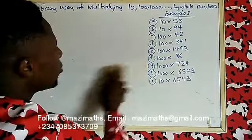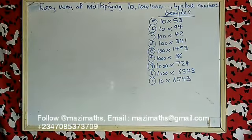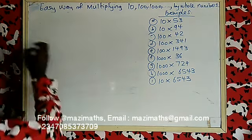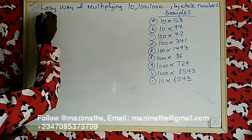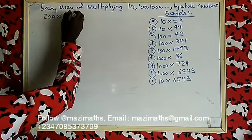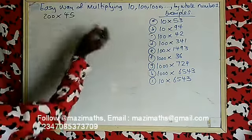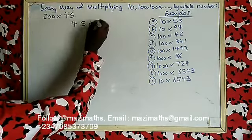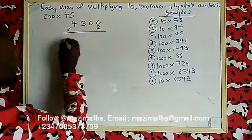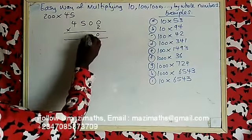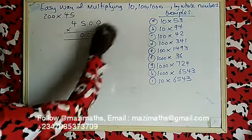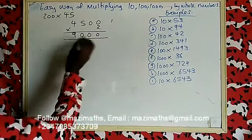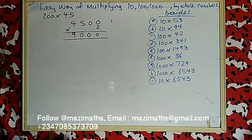Now let's try multiplying a whole number by 200. For example: 200 times 45. Write 45 first. 200 has two zeros — put one, two zeros. Then multiply by 2: two times zero is zero, two times zero is zero, two times five is ten — write zero, keep one. Two times four is eight, plus that one you kept, gives nine. Your answer is 9000.